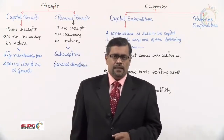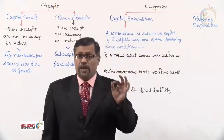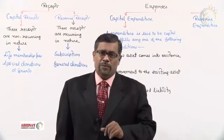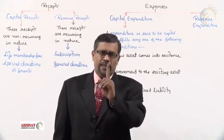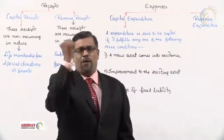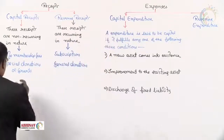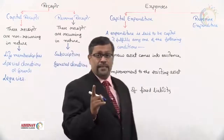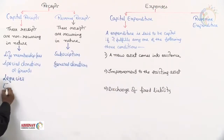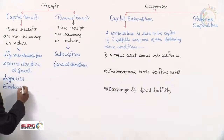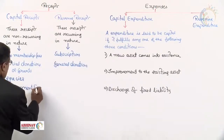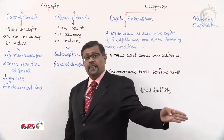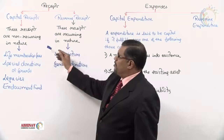Legacies are property received as per the will of a deceased person — on the death of the donor. How many times do you receive property as per a will? Only once. So legacies are capital receipts because they are received only once. Similarly, the endowment fund, which is usually of a huge amount, also becomes a capital receipt.